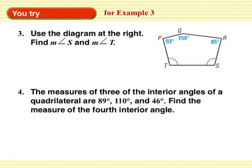You try. I'm going to push pause. Okay. You can figure it out. For number 3, use the diagram at the right to find the measure of angle S and T. They are equal, which means you can actually put a variable to both of them. Okay. X and X. And remember, X plus X is 2X. Number 4, find the measures of three of the interior angles of a quadrilateral. Okay. The fourth one is going to be X. And you're solving for X. Push pause.